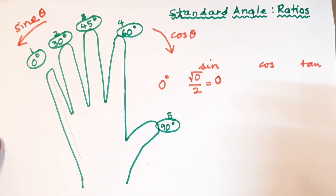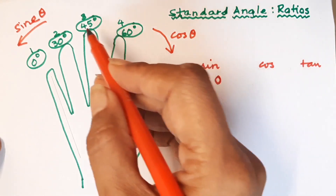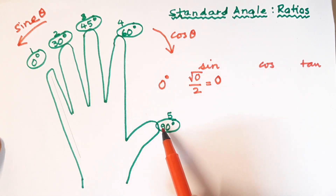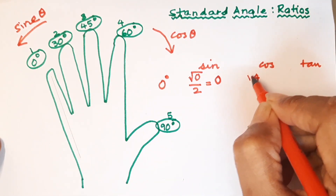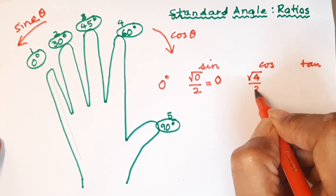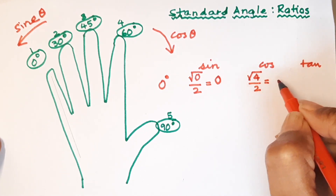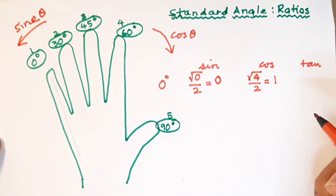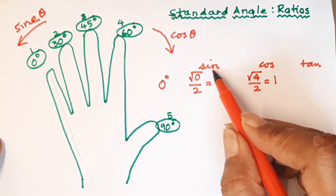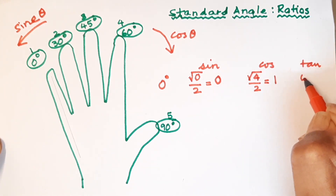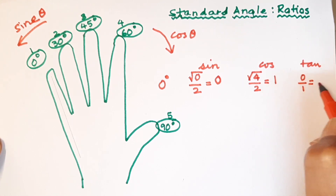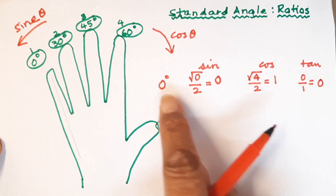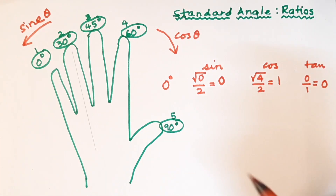So sine of zero degrees is zero. Now for cos of zero degrees, you look at the fingers on the right — there are four fingers: one, two, three, four. We write four, take the square root, and divide by two, giving us two upon two which equals one. For tan, it is sine upon cos: zero upon one, which equals zero. Those are our sine, cos, and tan ratios of zero degrees.